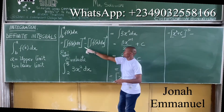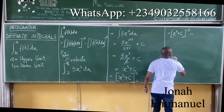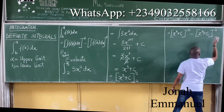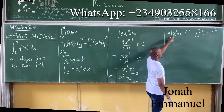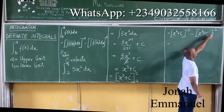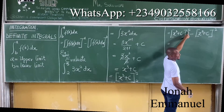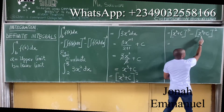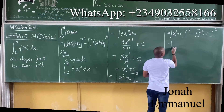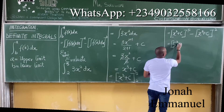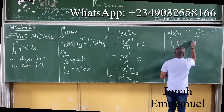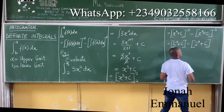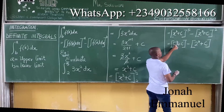So this equals [x³ + C] evaluated at 5, minus [x³ + C] evaluated at 2. That means put X as 5 in the first expression and X as 2 in the second. This becomes 5 to the power of 3 plus C, minus 2 to the power of 3 plus C. So that's 125 plus C, minus (8 plus C).